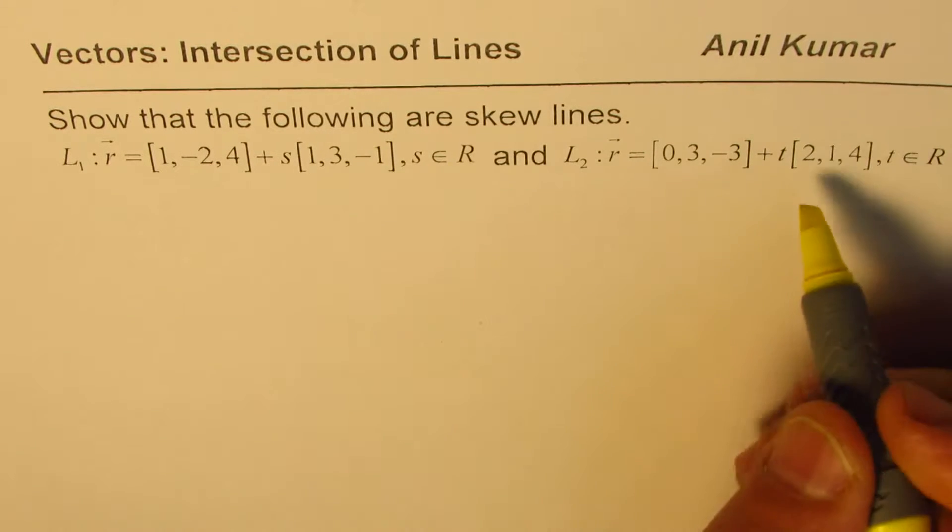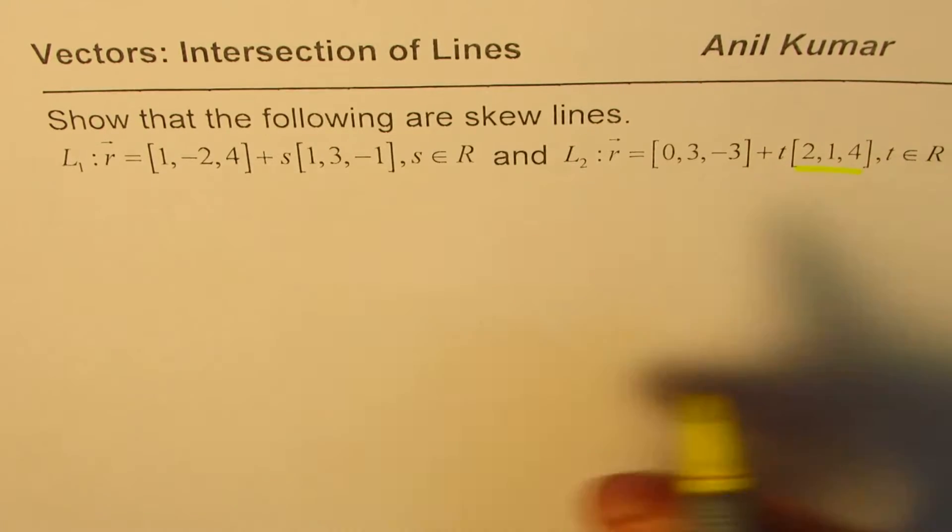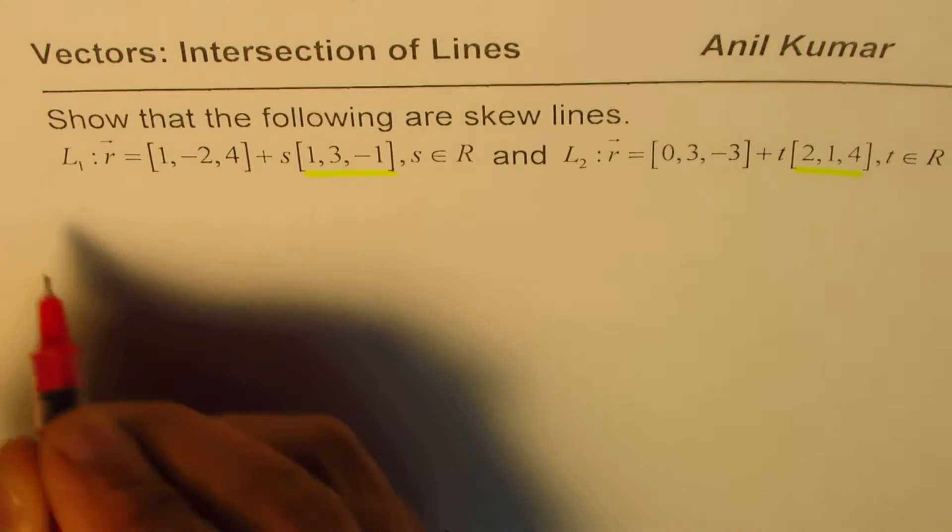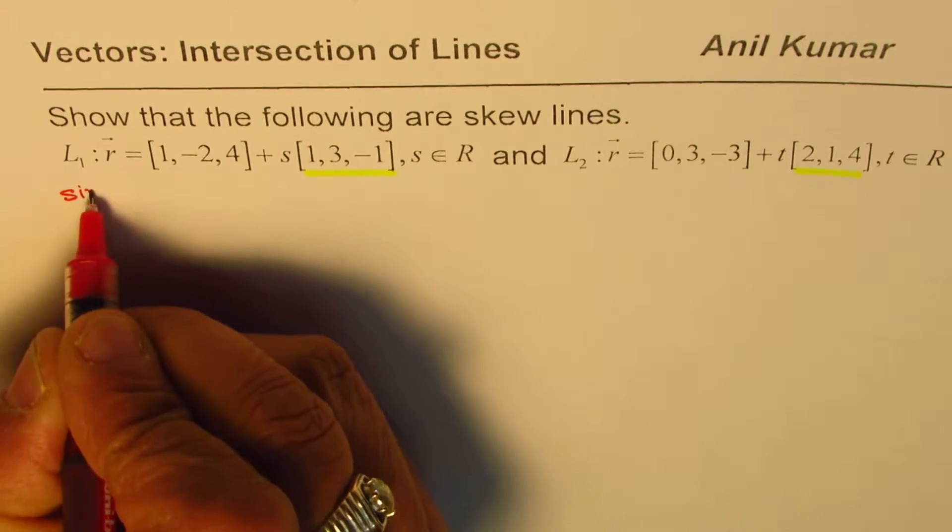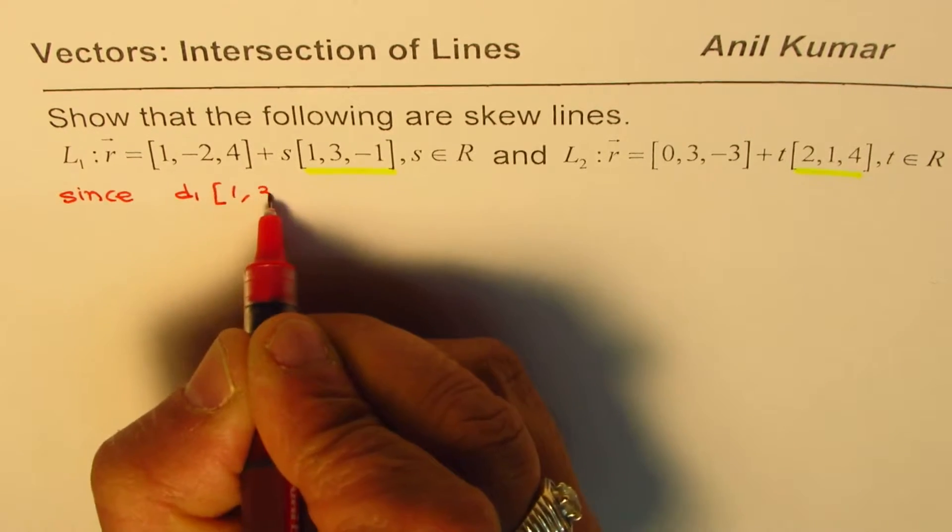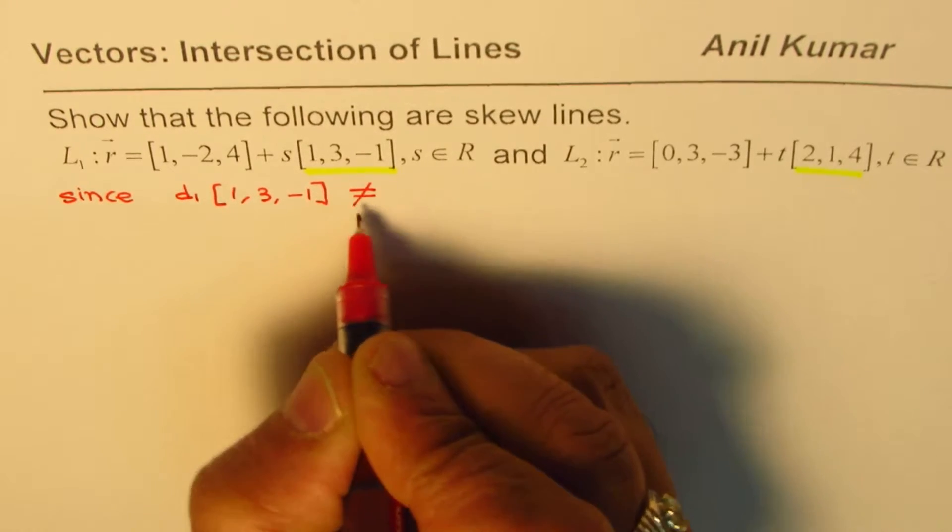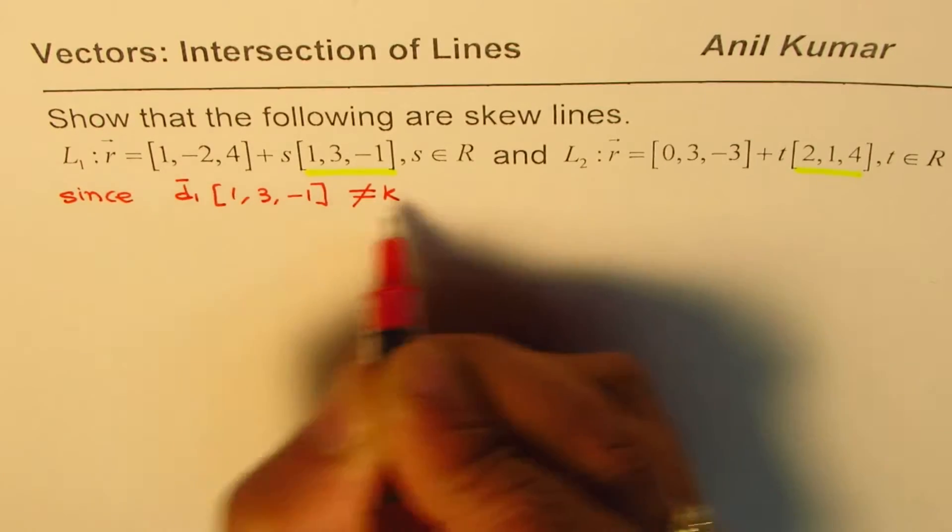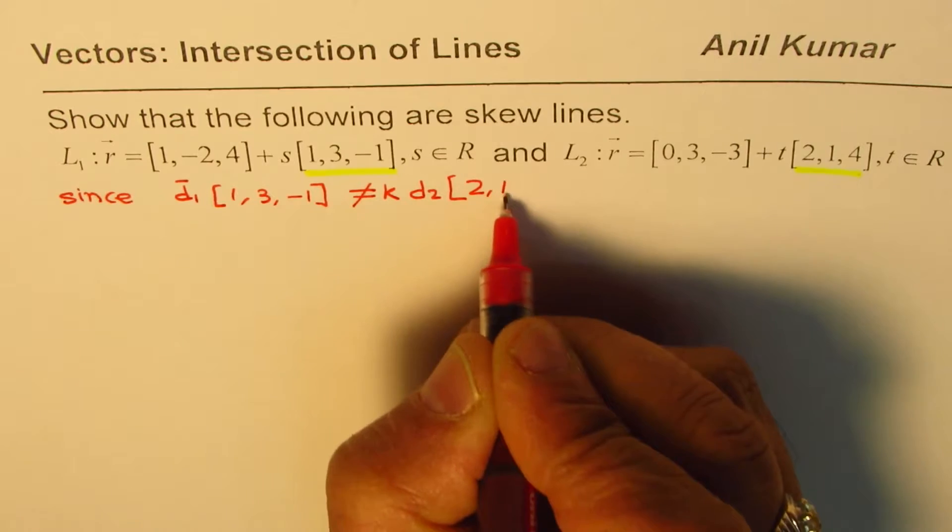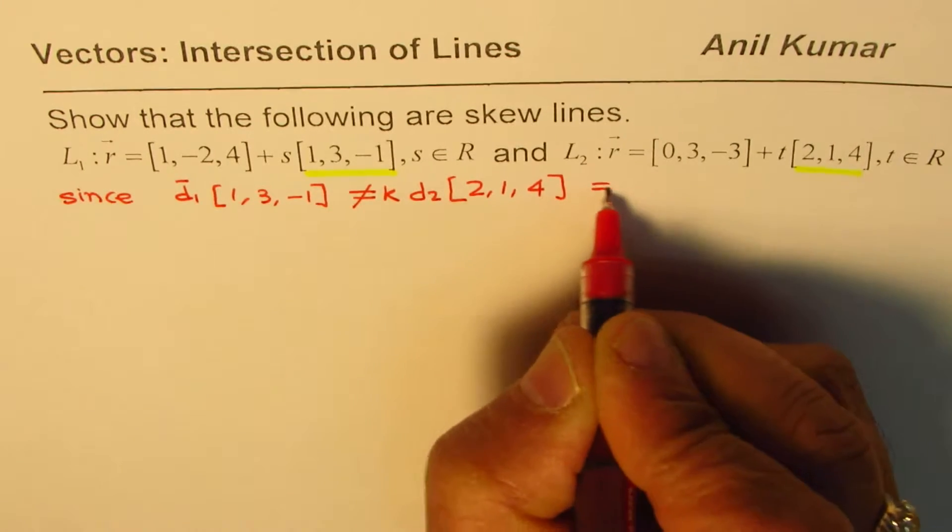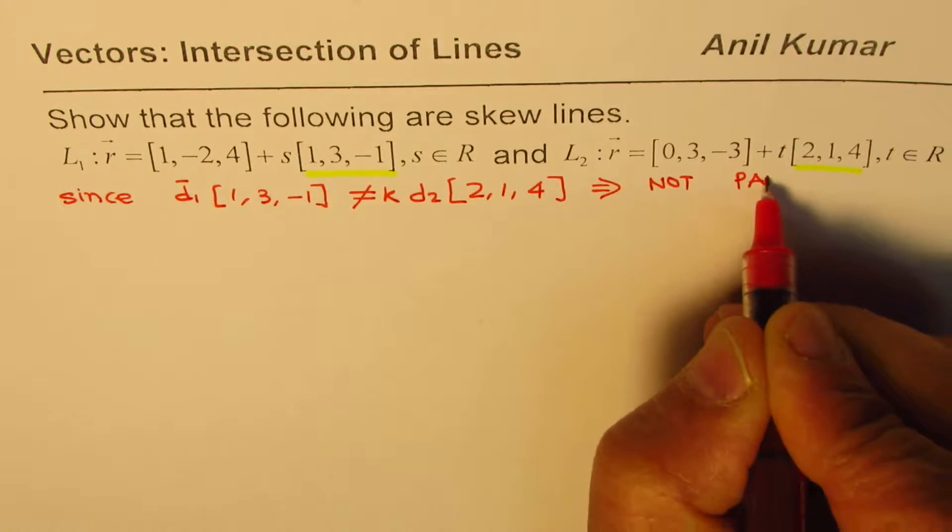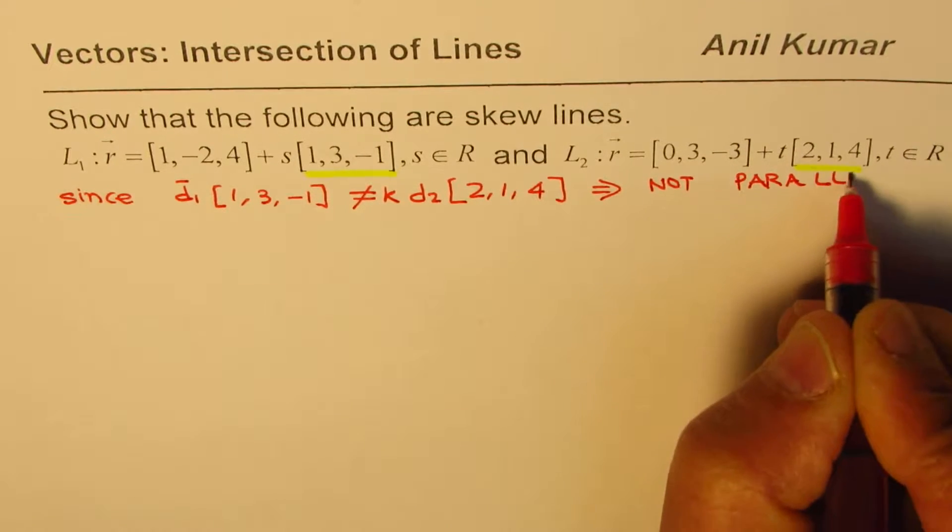In this you will notice that the directions are 2, 1, 4 and 1, 3, minus 1. Since d1 which is 1, 3, minus 1 is not a scalar multiple of d2, which in our case is 2, 1, 4, we can say that the lines are not parallel.